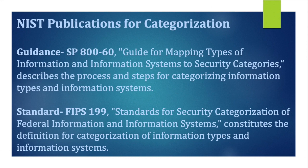Confidentiality means protecting information from unauthorized access — those who are not supposed to see or access that information should not access it. Integrity means protecting the information from unauthorized destruction or modification. Availability means making sure the information is available 24/7. The second vital area in FIPS 199 is potential impact, which means the severity of damage — the magnitude of harm that can result when there is a cyber breach.